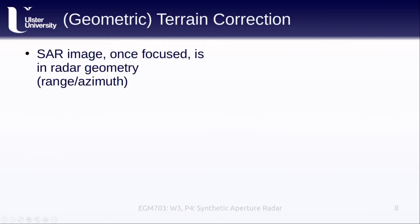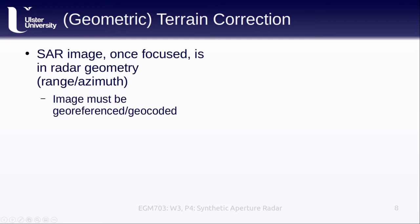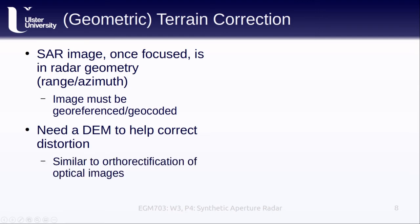Once our image has been focused, it's still in radar geometry — that is, the pixel locations correspond to the range distance and the azimuth distance rather than the actual location on the ground. If we want to compare the image to other remote sensing data or use it in GIS software, we have to geo-reference or geo-code the image. When we download a SAR image, it has information about the satellite's location that we can use to do this, though we usually also want to have a DEM to help correct the different distortions we've discussed.